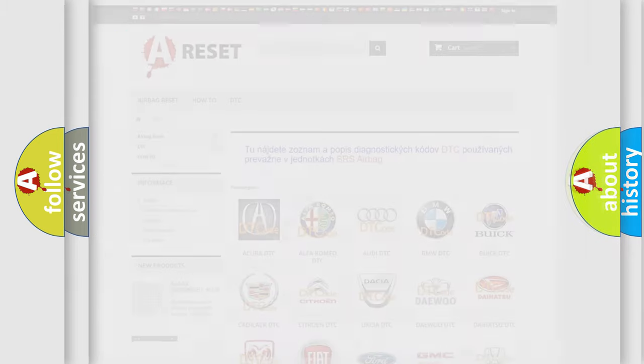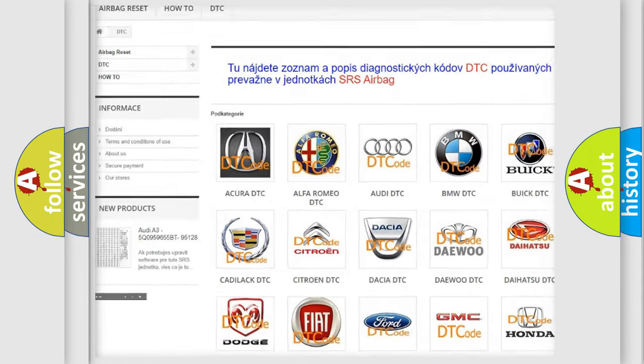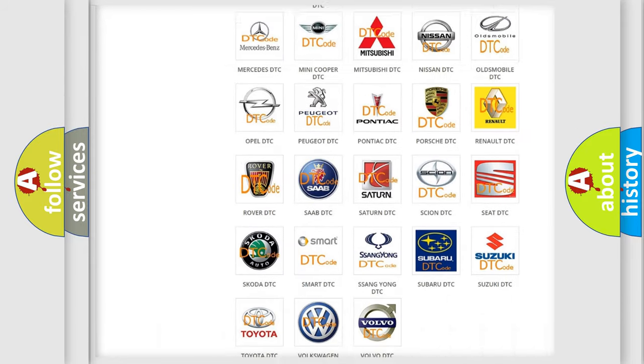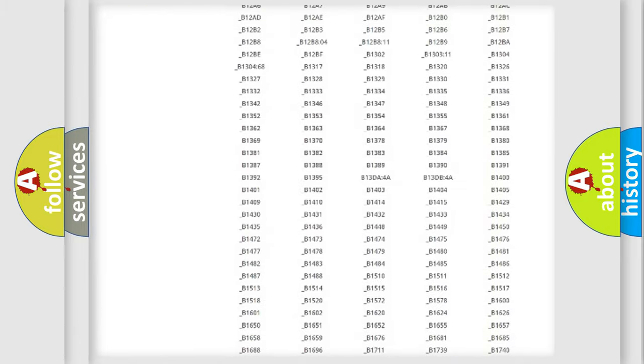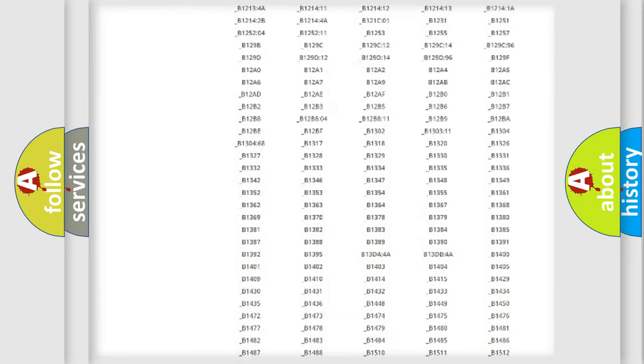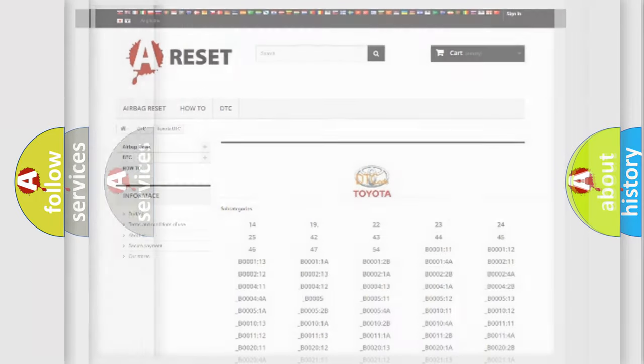Our website airbagreset.sk produces useful videos for you. You do not have to go through the OBD2 protocol anymore to know how to troubleshoot any car breakdown. You will find all the diagnostic codes that can be diagnosed in Toyota vehicles, and also many other useful things.